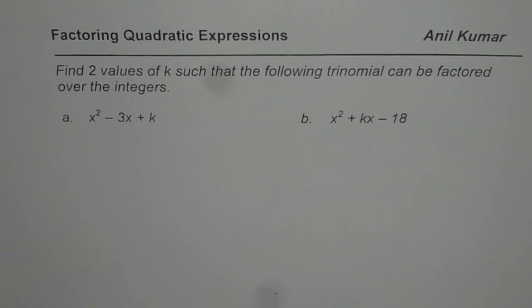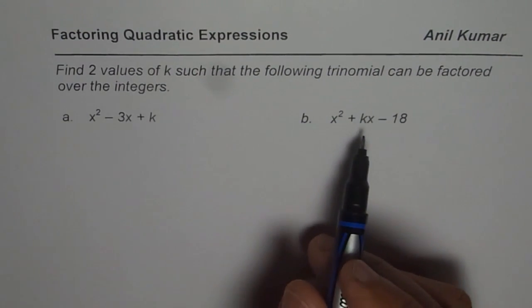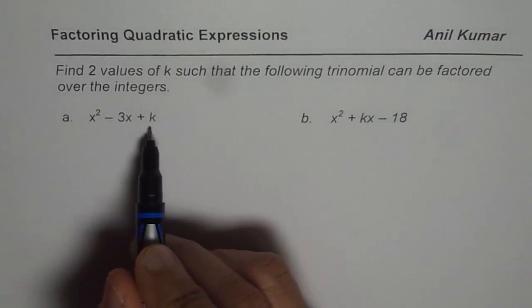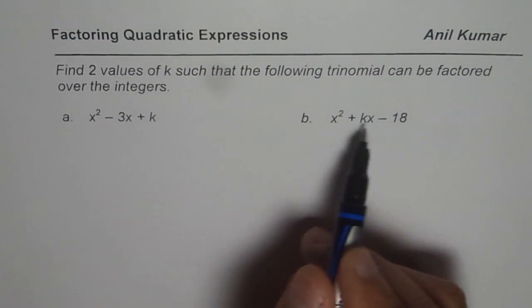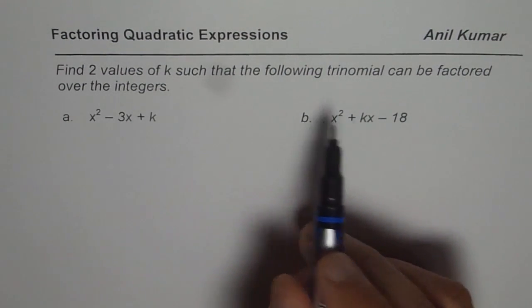I am Anil Kumar sharing with you test problems from my student Joseph. The question here is find two values of k such that the following trinomial can be factored over the integers. We are given two different quadratic equations. We need to find the value of k so that both of them separately can be factored over integers.